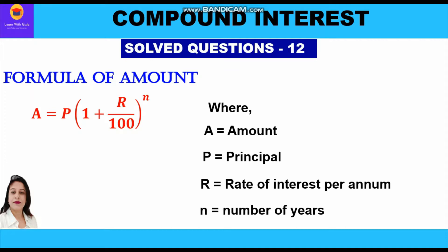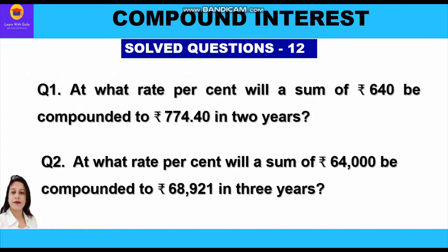Always remember, out of these four quantities — A, P, r, and n — in every question at least three values will be given to us and we need to find the value of the fourth quantity. In these two questions we will solve in this video, both the principal and amount are given, as well as the time period, and we have to find the rate of interest.